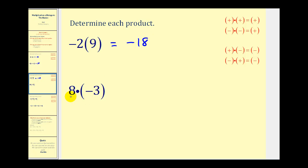Here we have a positive times a negative. The signs are different, so the product will be negative. Or, a positive times a negative is equal to a negative. So we have negative twenty-four.